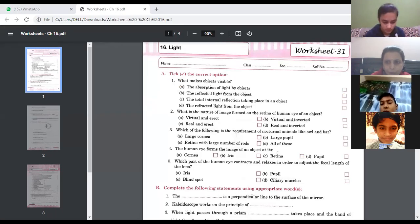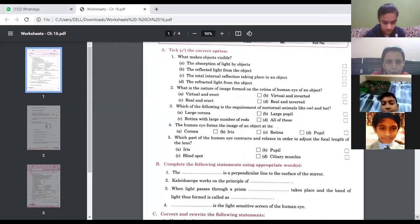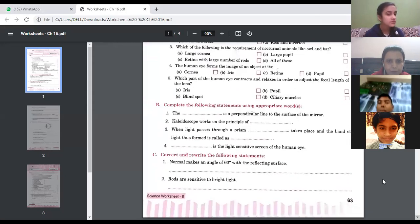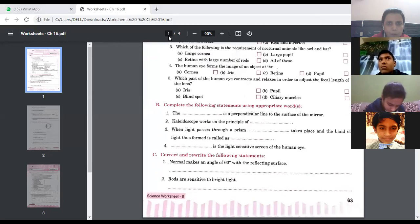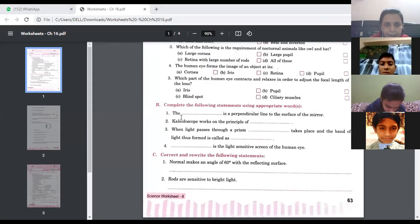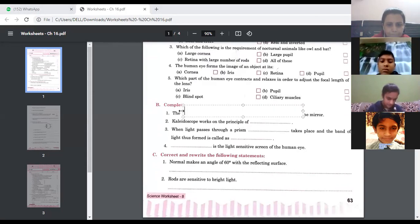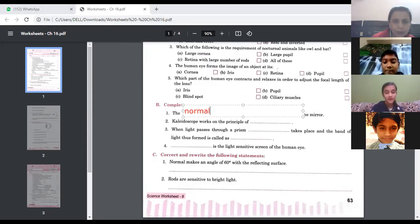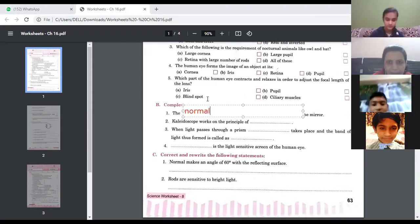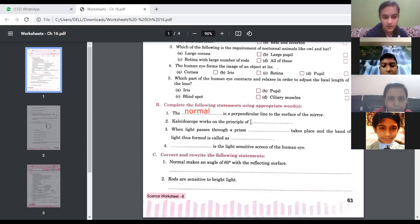Next is fill in the blanks. Complete the following statements. Kindly give me the answer, what can we write down? The first blank is a perpendicular line to the surface of the mirror. Normal, very good.